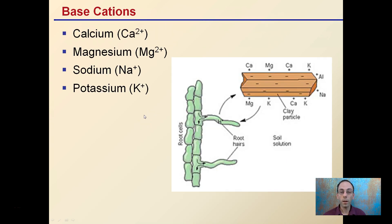Some of those base cations, as we've mentioned, are important nutrients, such as calcium, magnesium, sodium, and potassium. These are all involved in those cations that are interacting with the roots and the negatively charged soil particles.